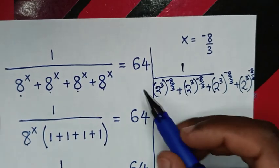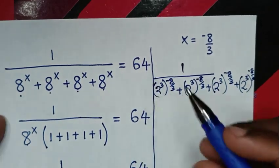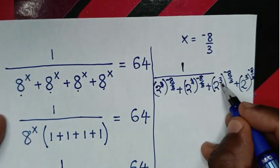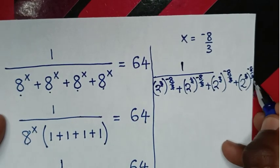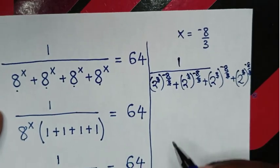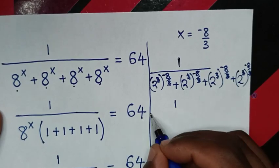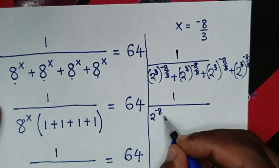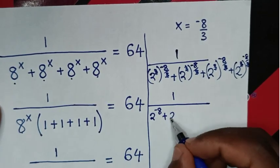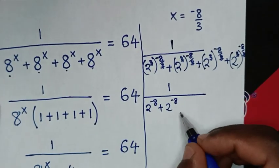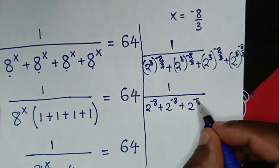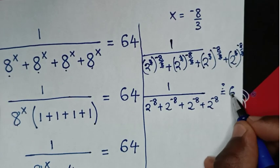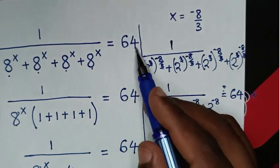Does this equal 64? In the denominator we count four terms of 2^(−8), so it becomes 1 over (4 times 2^(−8)), which equals 64.